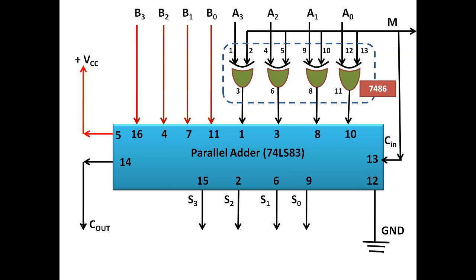Now let's see how we can carry out the entire process using an arrangement of simple parallel adders and a few exclusive-OR gates. The basic diagram combines a parallel adder and exclusive-OR gates to form a two's complement adder-subtractor unit. It has a control input where one pin of each XOR gate is tied together. The other inputs take one set of binary inputs, while the second operand is provided at B3, B2, B1, and B0.